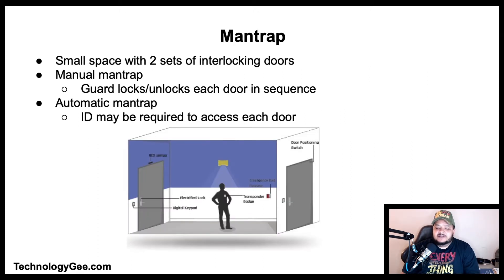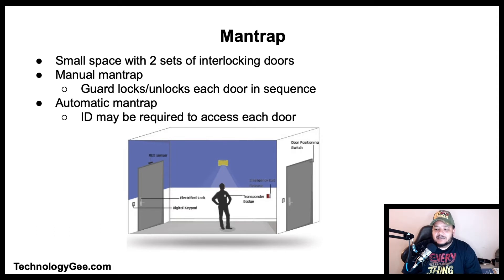A man trap is a physical security access control system comprising a small space with two sets of interlocking doors, such that the first set of doors must close before the second set opens. In a manual man trap, a guard locks and unlocks each door in sequence. An intercom and/or video camera are often used to allow the guard to control the trap from a remote location.